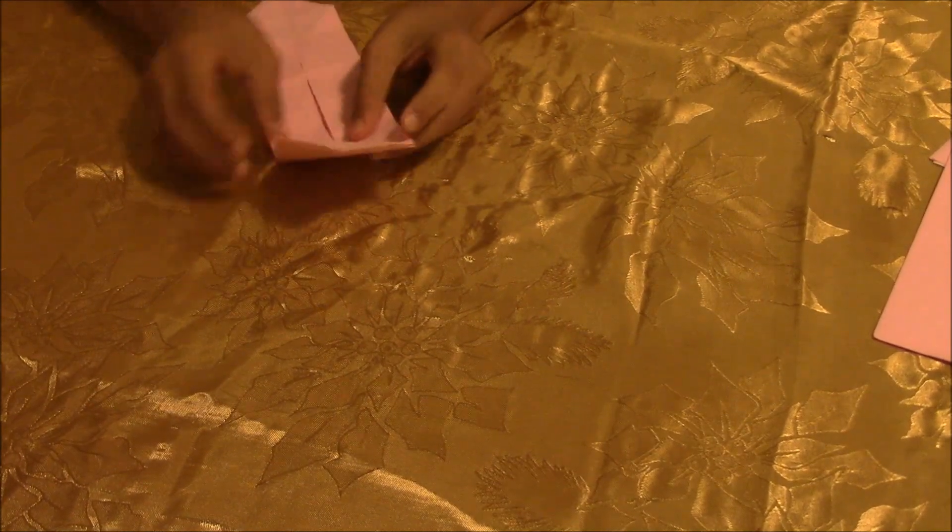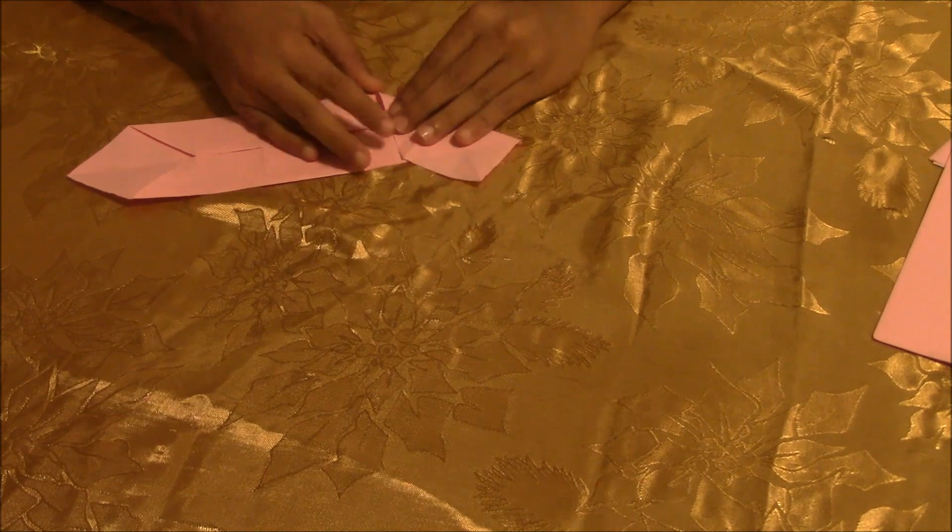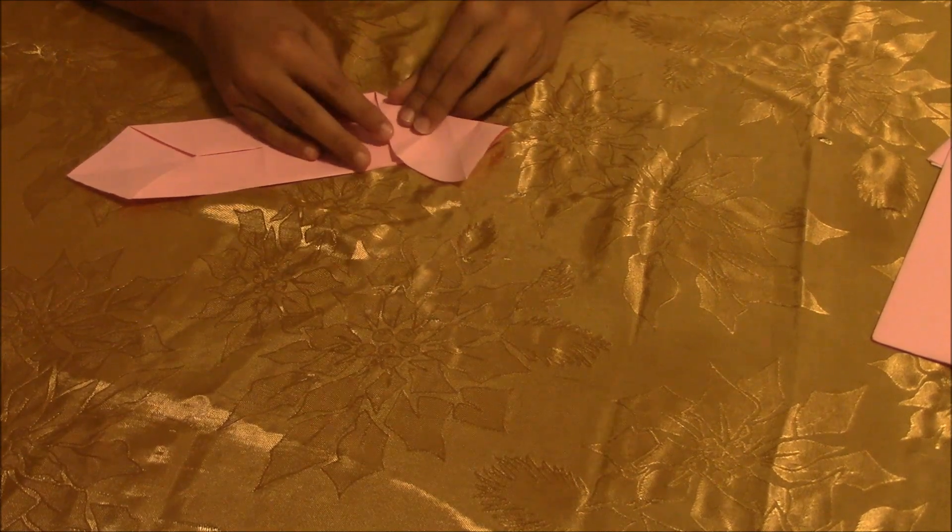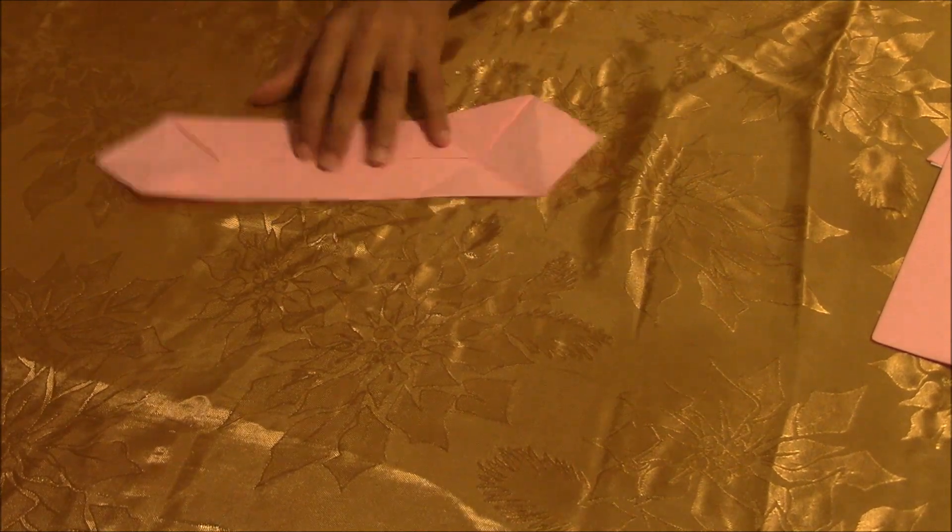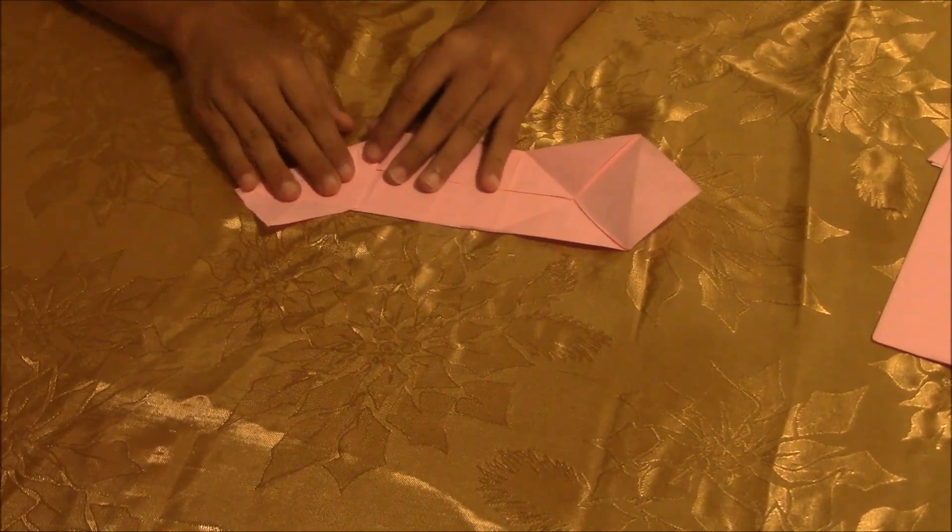After you're done creasing it, do it oppositely. Like that. Do the exact same thing to the other side. Grab it and then put it to the second line.